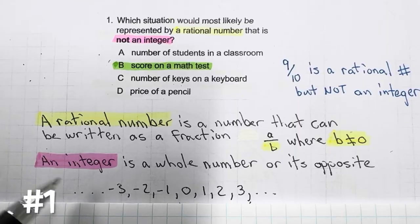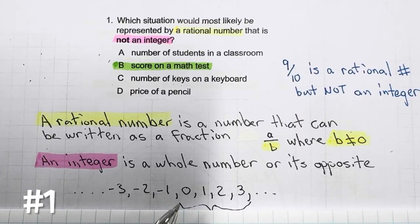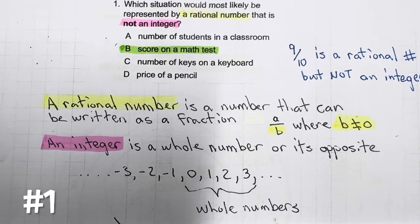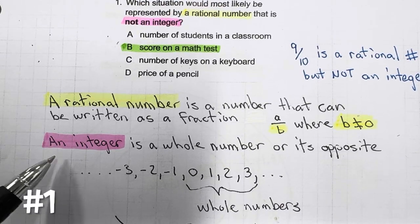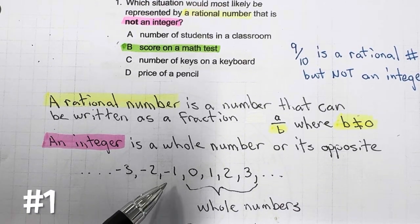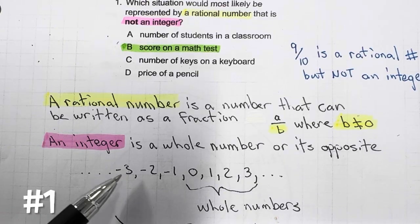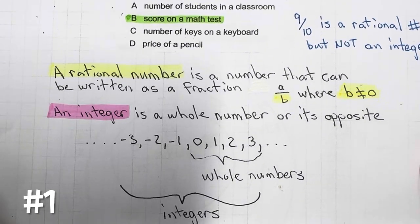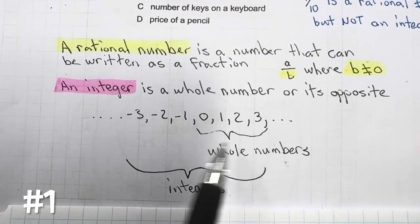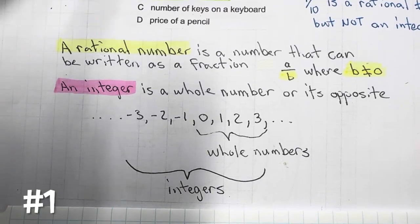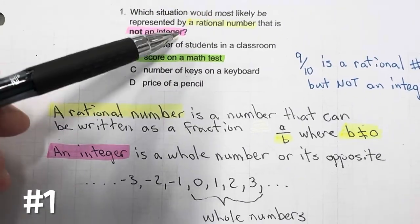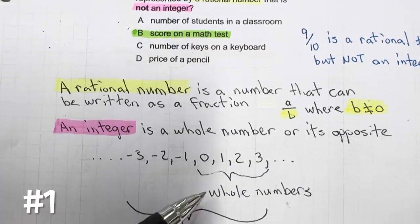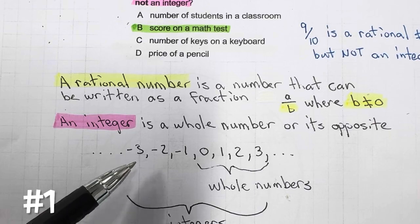An integer is a whole number — for example, 0, 1, 2, 3, 4, and so forth — and its opposites: negative 1, negative 2, negative 3. So these are all integers. The question requires a rational number, but not an integer — not whole numbers and their opposites.